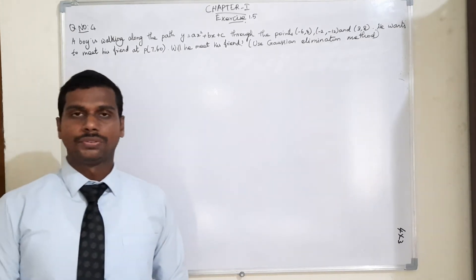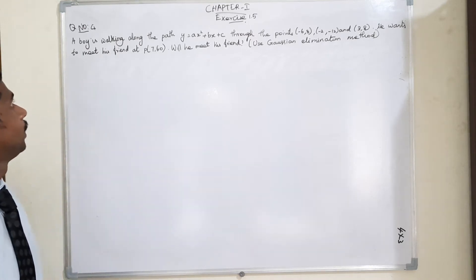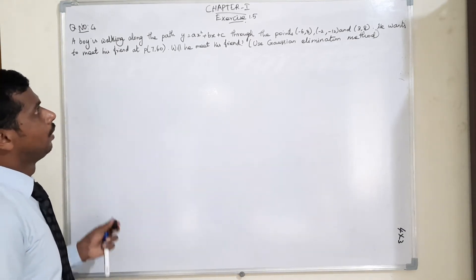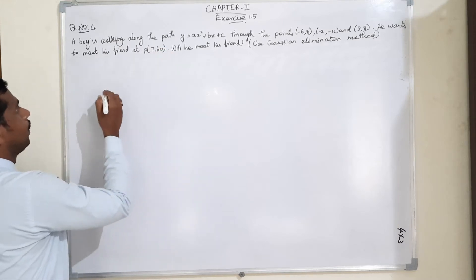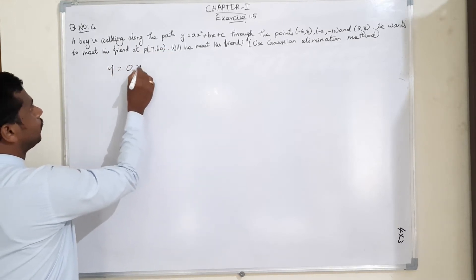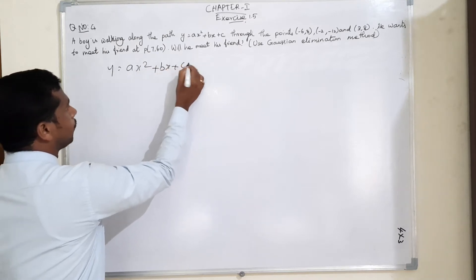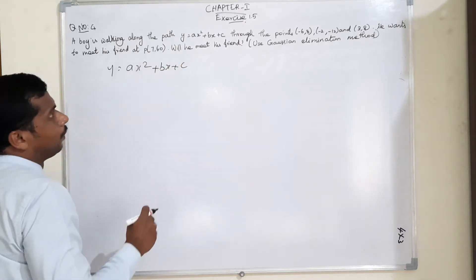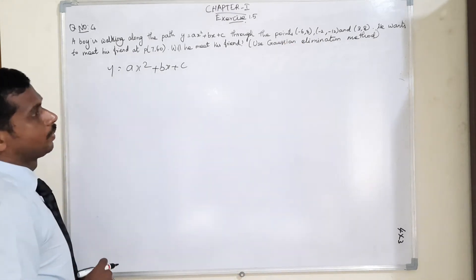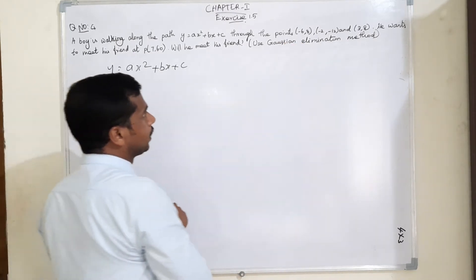This is also one of the Gaussian elimination method problems. The question is: a boy is walking along a path. The equation is put as y = Ax² + Bx + C, through the point where y = 8 and x = -6.